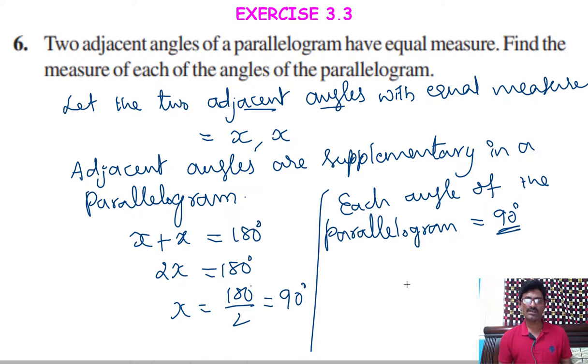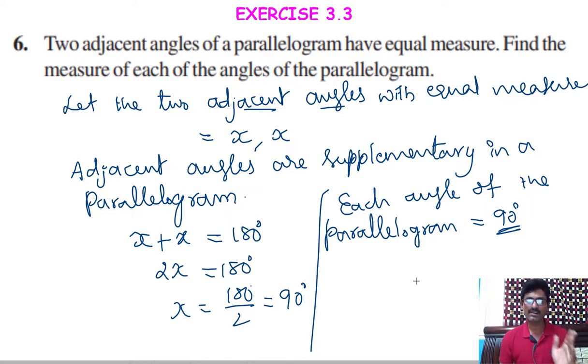If all the angles are equal to 90 degrees, that means the parallelogram may be a rectangle or may be a square.